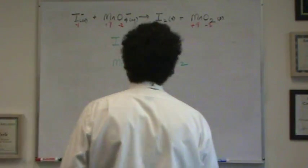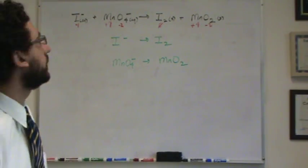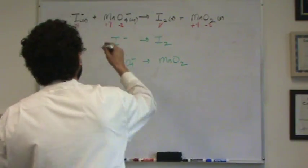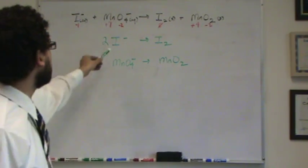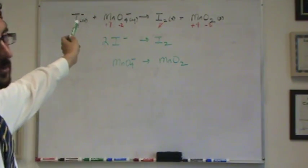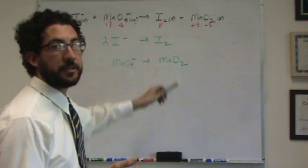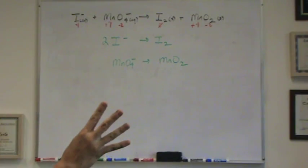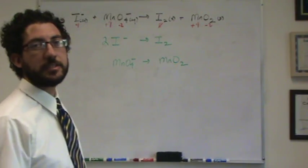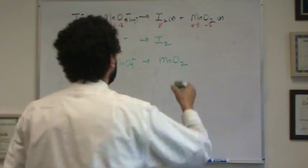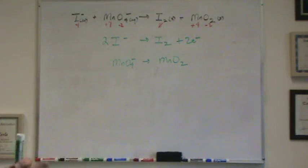Let's start with the top one. Step one, you balance anything that's not oxygen or hydrogen. There's two iodines here, so I need two here. Step two, you balance the oxygen, but this has no oxygen in it. Step three, you balance the hydrogen, but there's no hydrogen here. Step four, balance the charge. We've got minus two on this side and zero on this side. So to get it equal on both sides, I'm going to put two electrons here so that it's minus two on both sides.